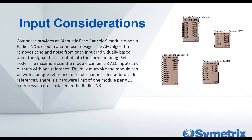Let's go back to AEC. In the Radius NX, the AEC algorithm removes echo and noise from each input based on the signal routed into the corresponding reference node. The current maximum module size is 8 channels. With a Radius NX dual co-processor card, you get 16 channels — two 8-channel echo cancelers. You can also configure it so each channel has individual references, with a current maximum of 6x6. You can see at the bottom left: 6 inputs each with an individual reference.